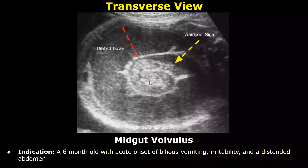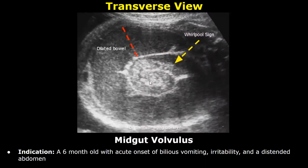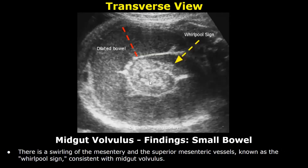This is a report for midgut volvulus. Indication: a six-month-old with acute onset of bilious vomiting, irritability, and undistended abdomen. Findings: there is a swirling of the mesentery and the superior mesenteric vessels, known as the whirlpool sign.